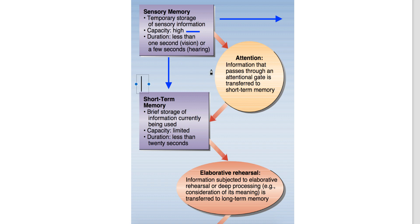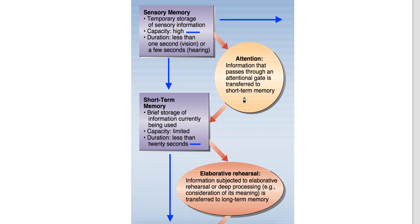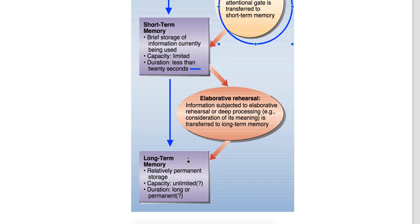When information comes into short-term memory, the duration is around 20 seconds. Then if you continue to focus on it in your mind, you will maintain it. If you don't, you will move forward and forget what you have seen. In short-term memory, for information to go into long-term memory permanently, you have to remember it. For sensory memory, you need to give attention. For short-term to long-term memory, you need elaborative rehearsal.